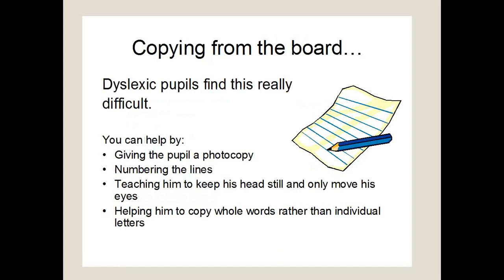Many dyslexic pupils will find it very difficult to copy from the board. Things you can do in the classroom include changing the whiteboard background colour away from the harsh white — dyslexic children find it very hard to copy from a white background. The relationship you have with the classroom teacher is important. Some TAs I met on Monday didn't know what the classroom teacher was going to be teaching over the whole term, so they couldn't photocopy text in advance. If you can, get a photocopy of any classroom text.